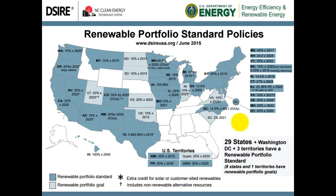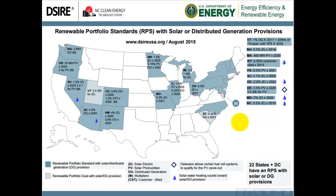Sometimes within these policies there's a breakdown by different renewable sources. Looking at renewable portfolio standards that have solar or distributed generation provisions — solar being a specific type of distributed generation, typically meaning a small residential or small business generator. In Delaware, 3.5% of electricity must come from photovoltaic solar panels by 2026.